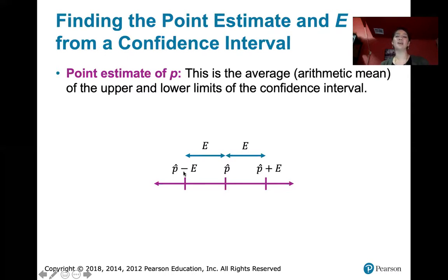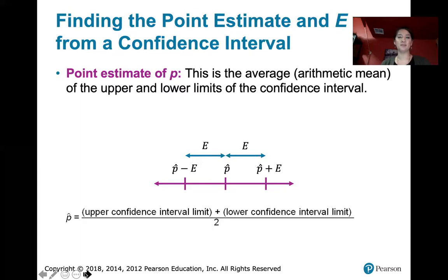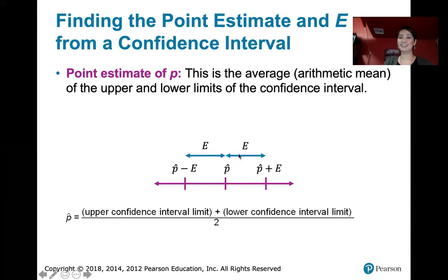So if I want to find p-hat and I have the lower limit and the upper limit, all I need to do is find their average or the arithmetic mean. We just add the upper limit to the lower limit and divide by two, and that gives us p-hat. Once I find p-hat, if I have the upper limit, I can just take the upper limit and subtract p-hat to get the error. That's one way of doing it.